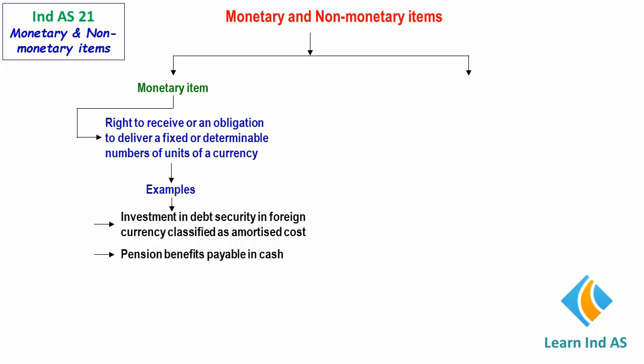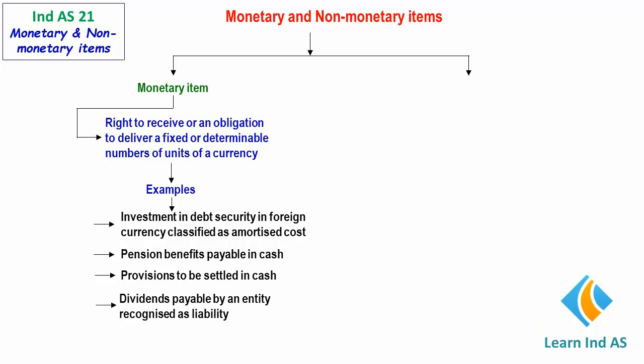Other examples of monetary items include pension benefits payable in cash, provisions to be settled in cash, and dividends payable by an entity recognized as a liability.